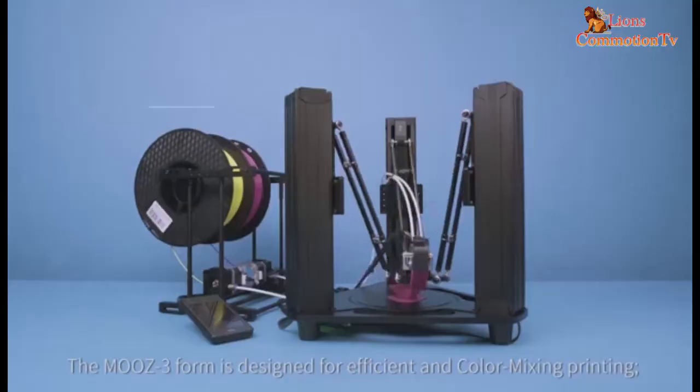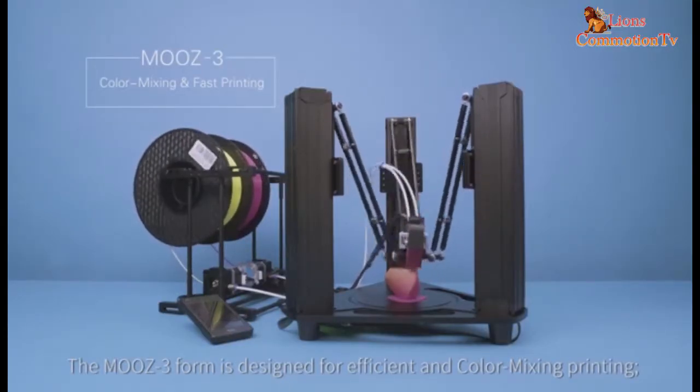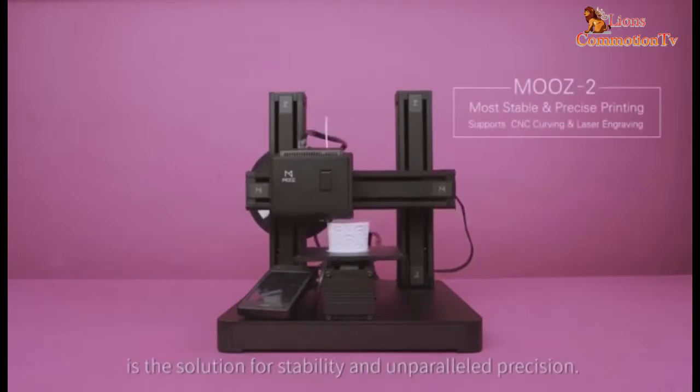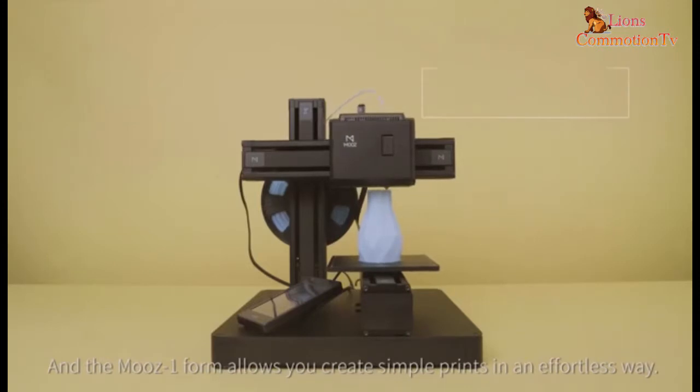The Moose 3 form is designed for efficient and color mixing printing. The Moose 2 form, meanwhile, is the solution for stability and unparalleled precision. And the Moose 1 form allows you to create simple prints in an effortless way.